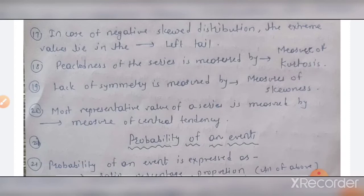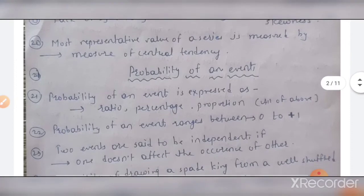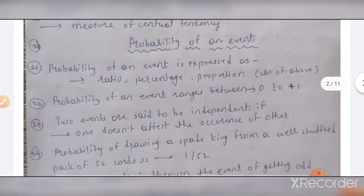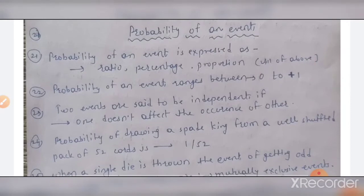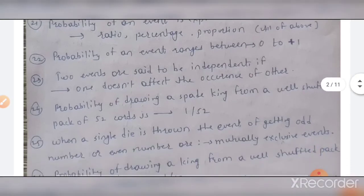The eighteenth MCQ: peakedness of a series is measured by the measure of kurtosis. The nineteenth MCQ: lack of symmetry is measured by the measure of skewness. The twentieth MCQ: the most representative value of a series is measured by measure of central tendencies. These three MCQs are important — please mark them. Moving on to probability: the probability of an event ranges between zero and one. Last year one question was on this topic.